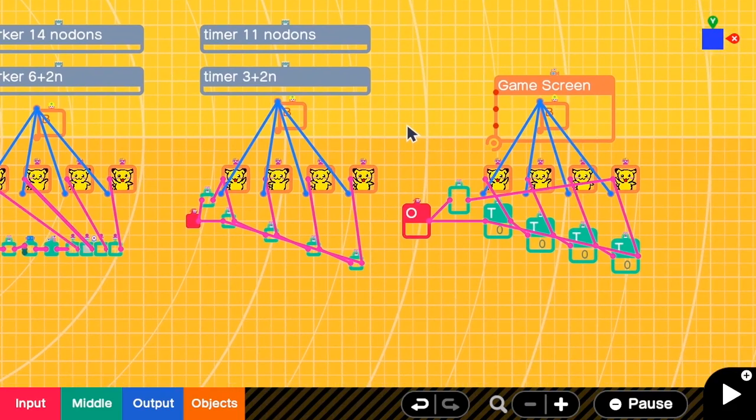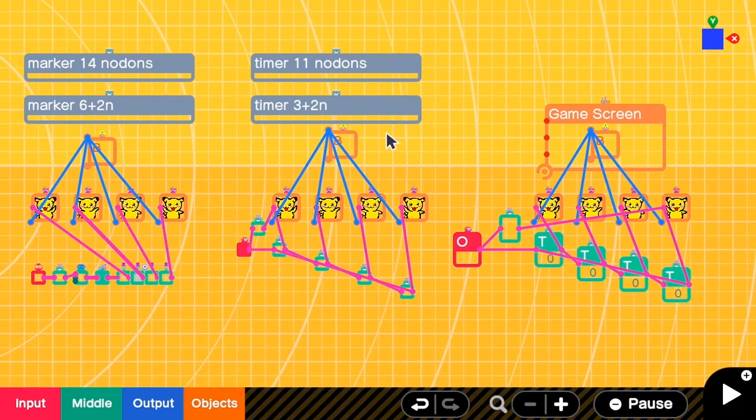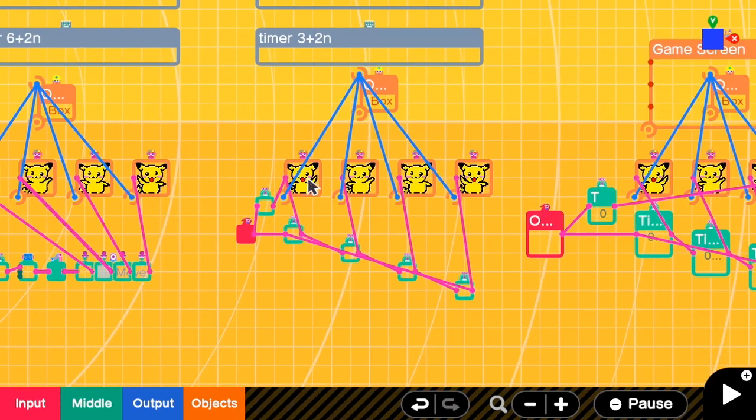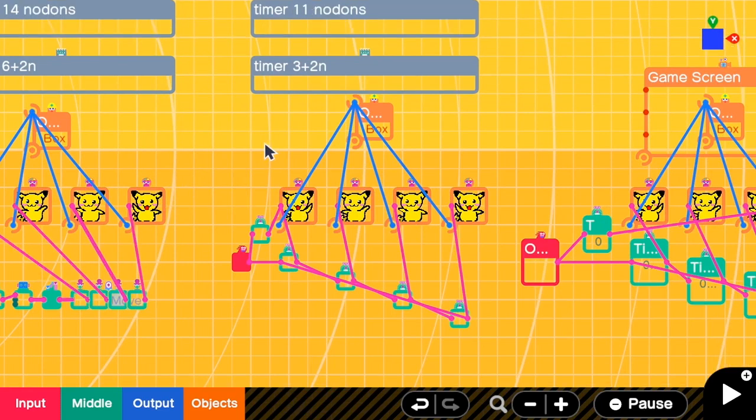Okay, let's talk about the pros and cons of different implementation. Of course, timer nodon takes the least number of nodons. But the animation order is not bouncing. So the order of the animation is one, two, three, four, one, two, three, four.